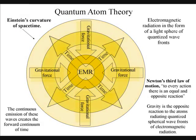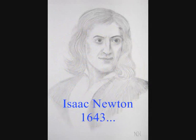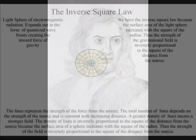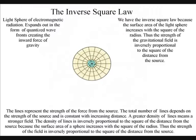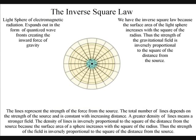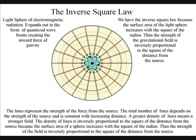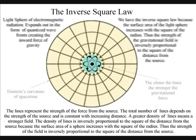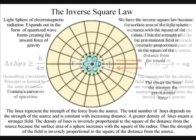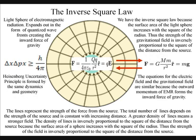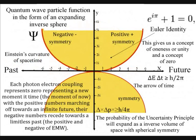There is no mysterious action at a distance, as in Newton's theory of gravity, because the gravitational field will propagate at the same speed that electromagnetic radiation moves, the speed of light. We have the inverse-square law, because the surface area of the light sphere increases with the square of the radius. Thus the strength of the gravitational field is inversely proportional to the square of the distance from the source.